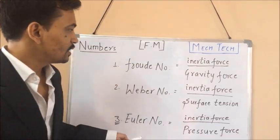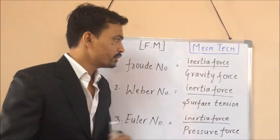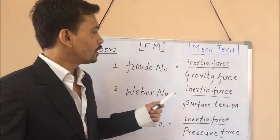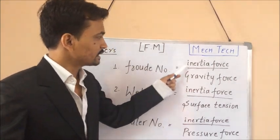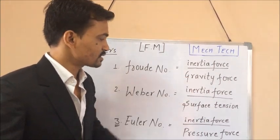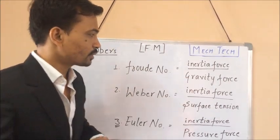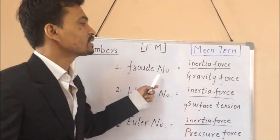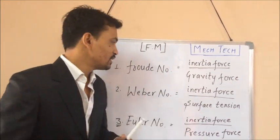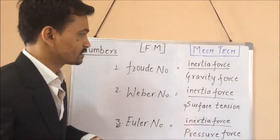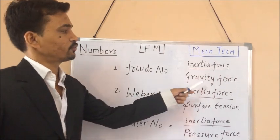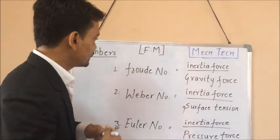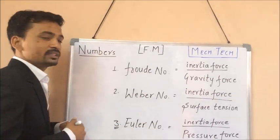Here I have written the numbers on the board, and we can easily see that the numerator of all these numbers is the same — that is INERTIA FORCE. The problem occurs with the denominator: which number is related to which force. The trick is to remember which force is related to which number.